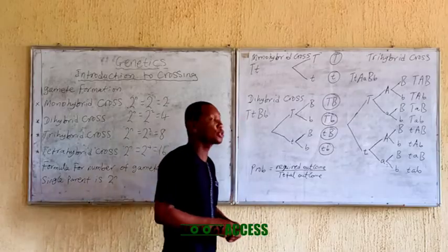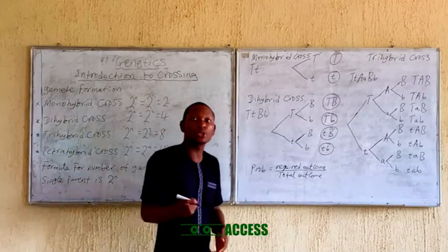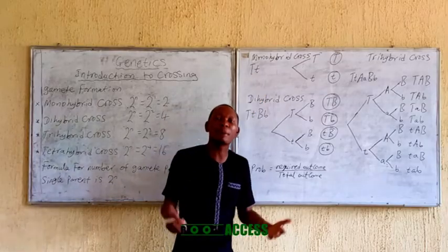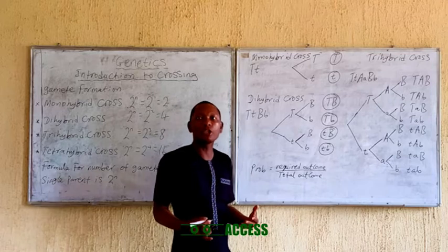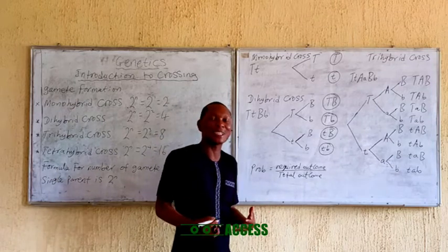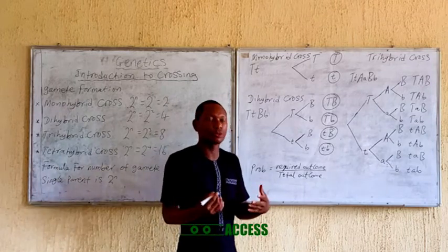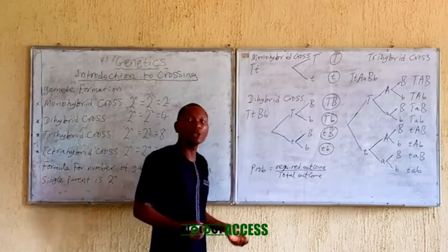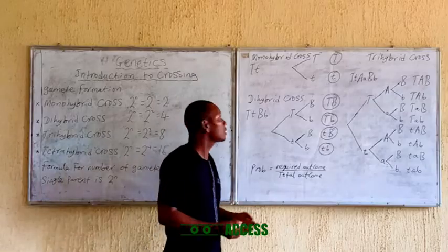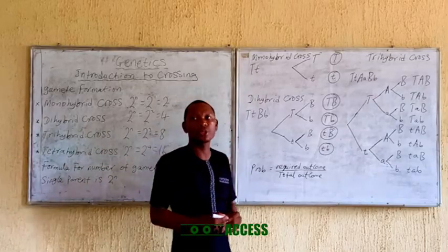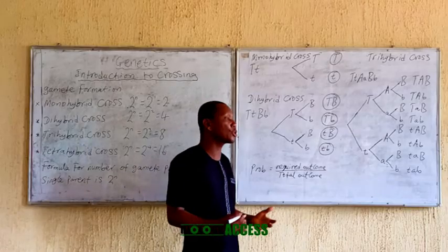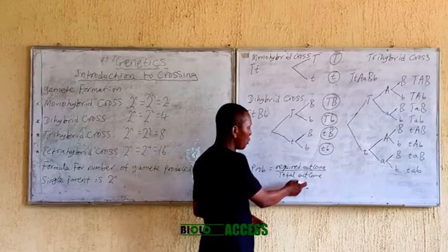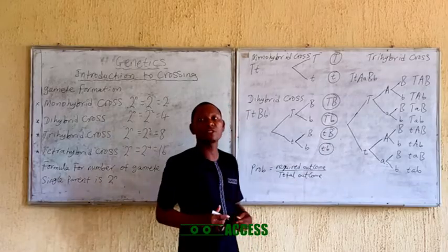Before we go to trihybrid cross, if you carry out a monohybrid cross, I can ask you: what is the probability of having a capital T — that is, the tall gene? This is the tall gene, and this is the short gene. The formula of probability is required outcome over total outcome. That is the formula of probability.